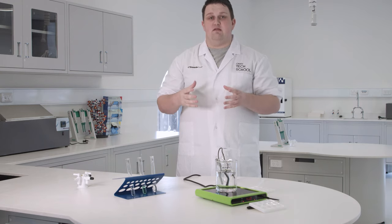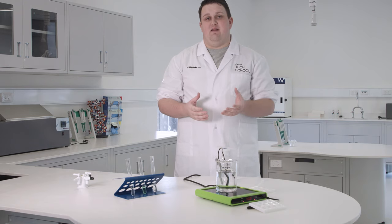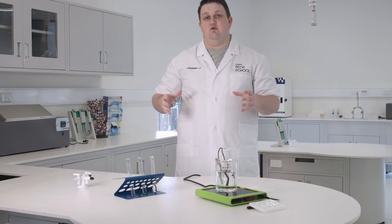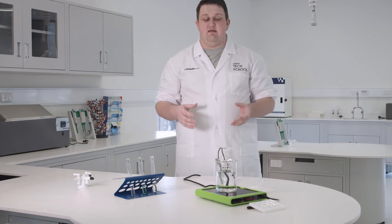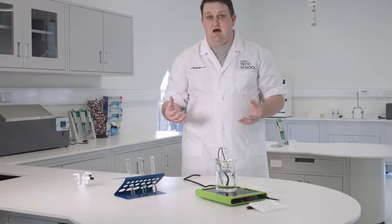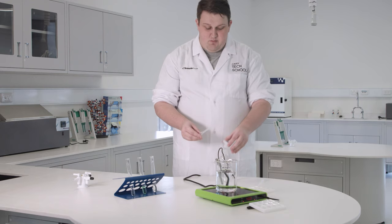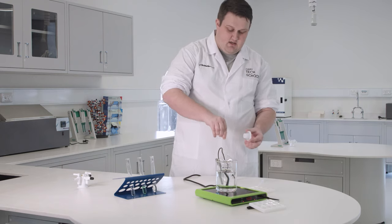To do that we're going to monitor the breakdown of the starch by the amylase enzyme over time using the starch iodine indicator system. The way that works is that iodine in the presence of starch turns a very dark blue or black color as I'll show on our spotting tile.